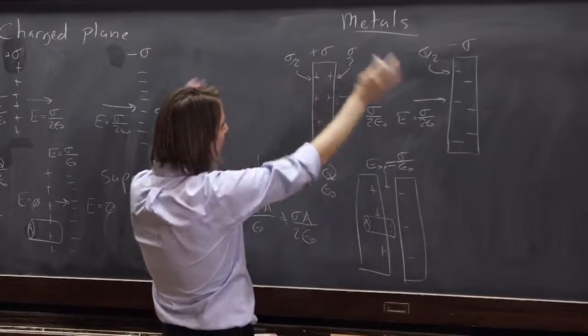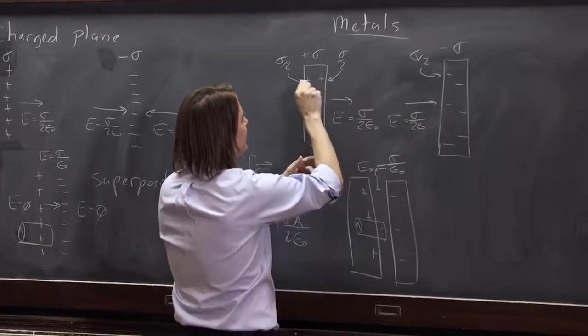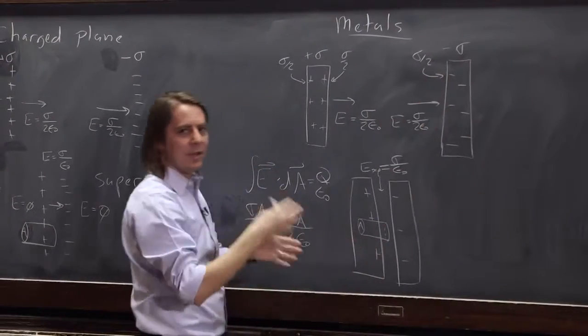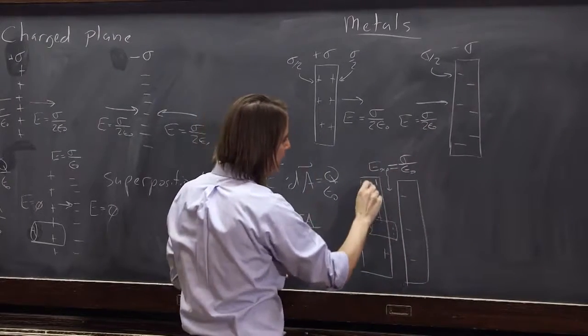So when this thing was by itself, the charge distributed uniformly on each side, everything was fine. But when you bring it close to this, these charges see those negative charges and they want to get together. So you bring them close and all the charge that was back here now runs over here.